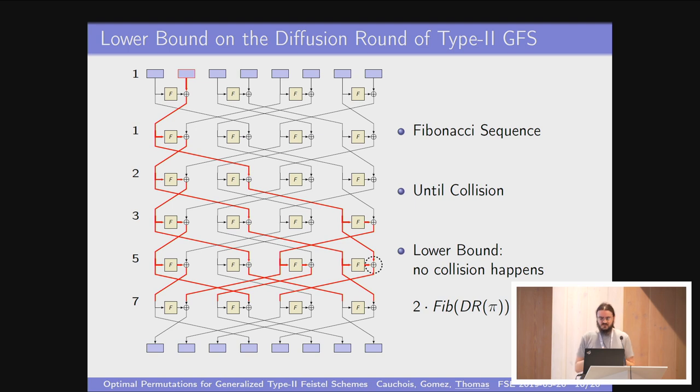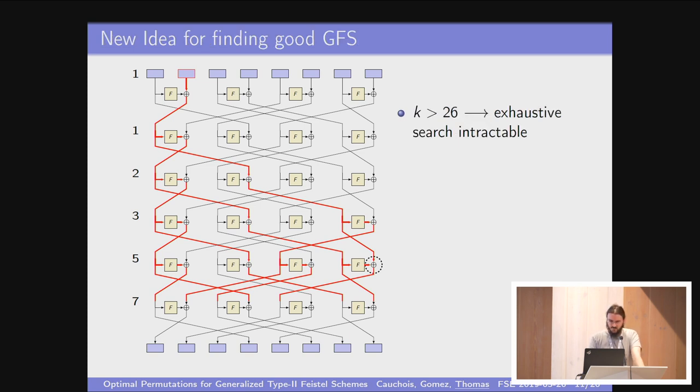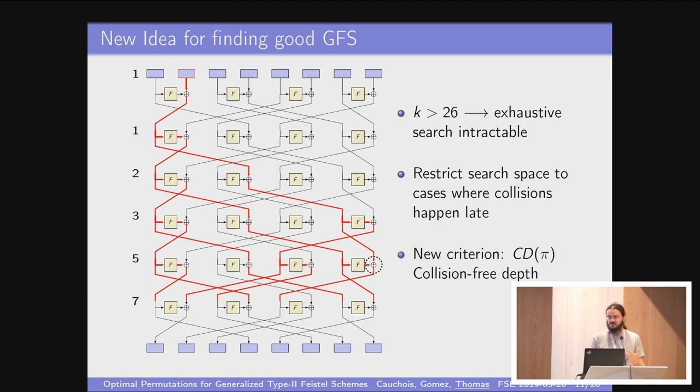Based on this idea, when exhaustive search is intractable, we try to reduce the search space to permutations where the number of collisions in the first few rounds is very small or does not happen at all. There's this new criterion which we call collision-free depth, or CD for short, which is basically the number of rounds before any collision happens. Here, the collision-free depth for this particular block is three. But if you were to begin on the block before, this is four rounds. If you were to begin on the blocks to the left, that would be three. So the collision-free depth for this particular permutation is three.